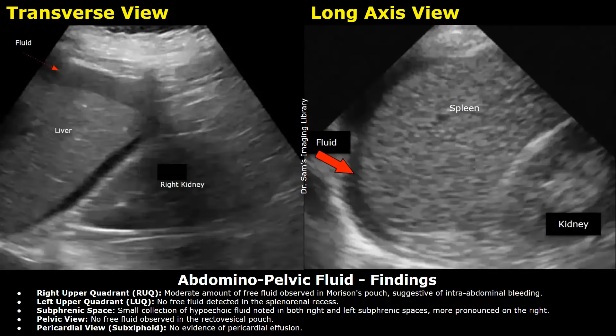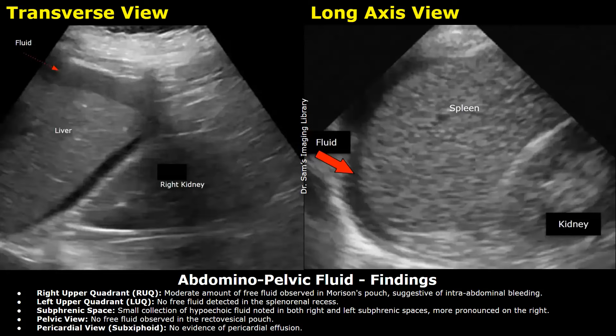Findings — Right upper quadrant: moderate amount of free fluid observed in Morrison's pouch, suggestive of intra-abdominal bleeding. Left upper quadrant: no free fluid detected in the splenorenal recess. Subphrenic space: small collection of hypoechoic fluid noted in both right and left subphrenic spaces, more pronounced on the right. Pelvic view: no free fluid observed in the recto-vesicle pouch. Pericardial view: no evidence of pericardial effusion.